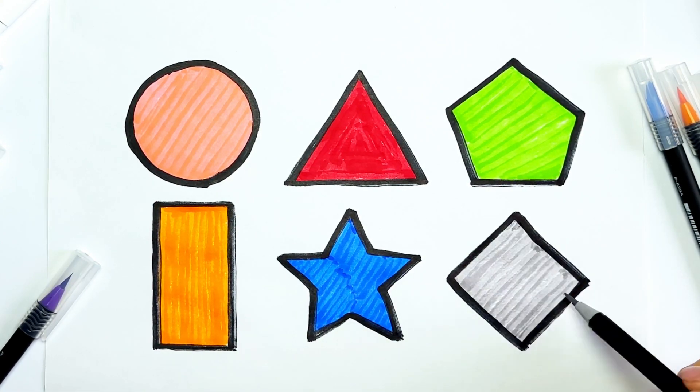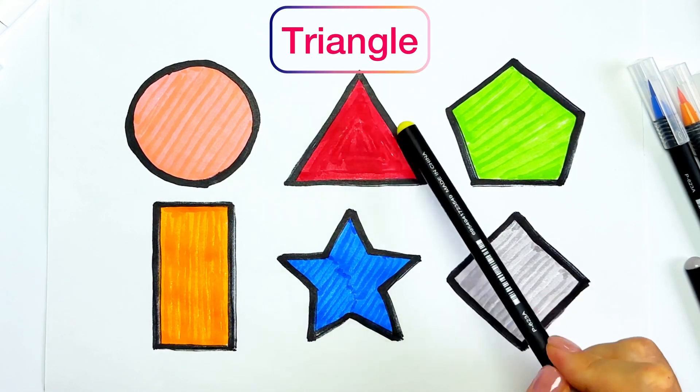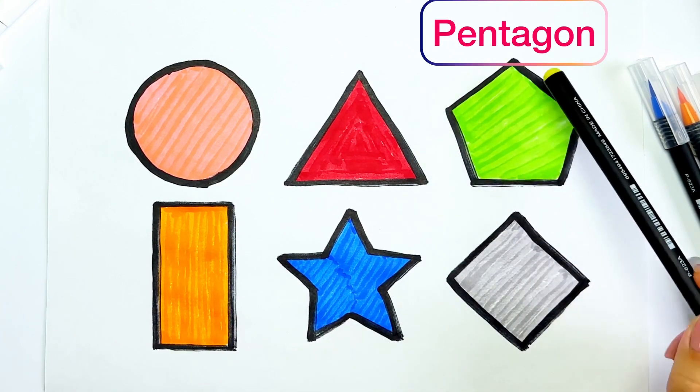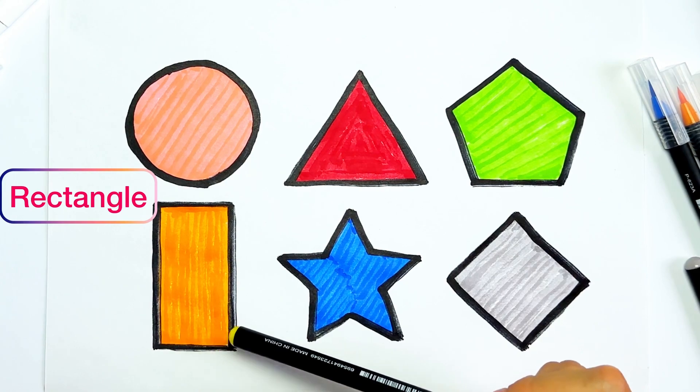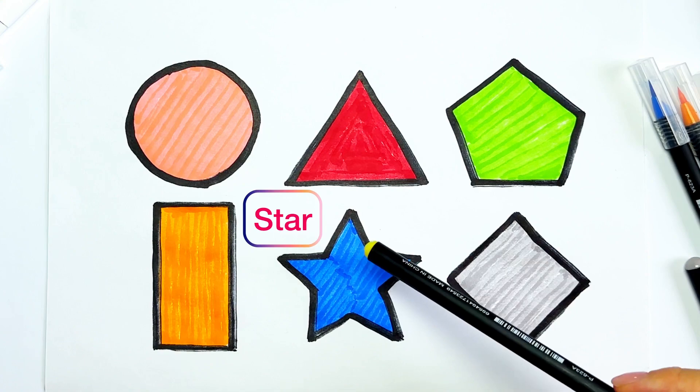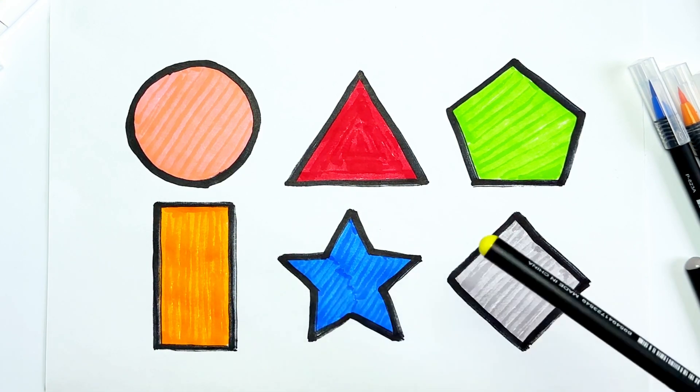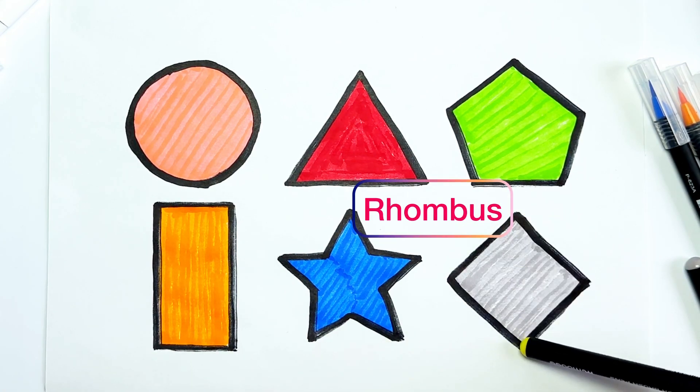So we have pink circle, red triangle. One, two, three angles. Light green pentagon. One, two, three, four, five angles. Orange rectangle. Four angles, two long sides and two short sides. Blue star. Blue five-pointed star. One, two, three, four, five.